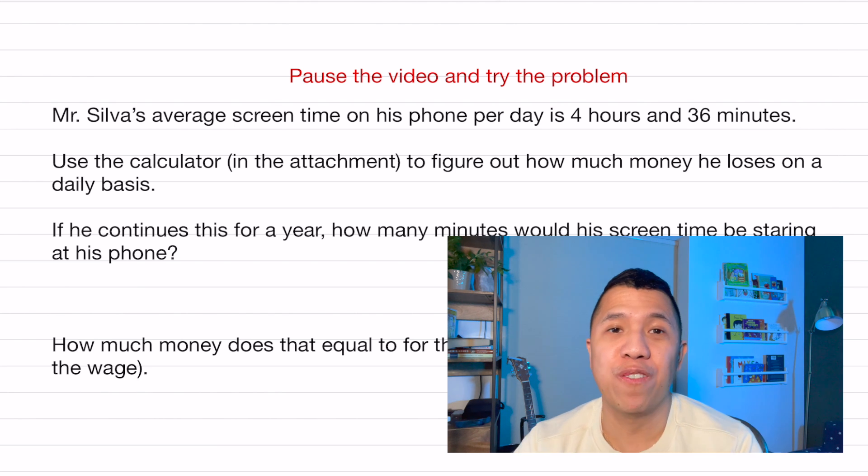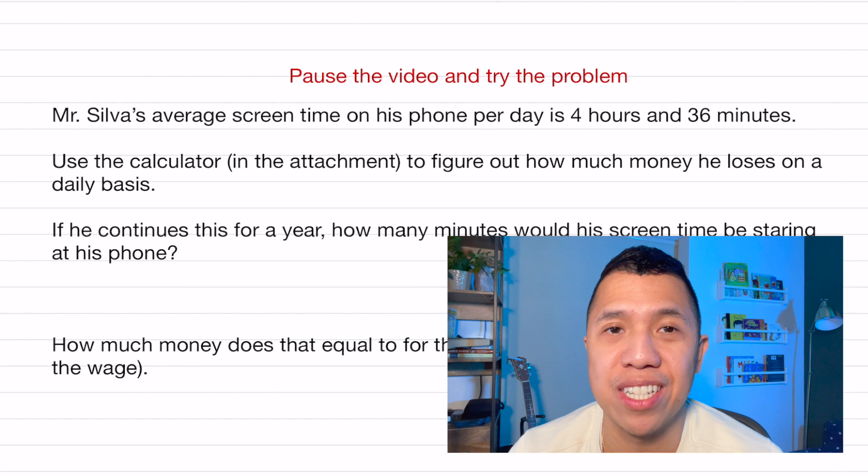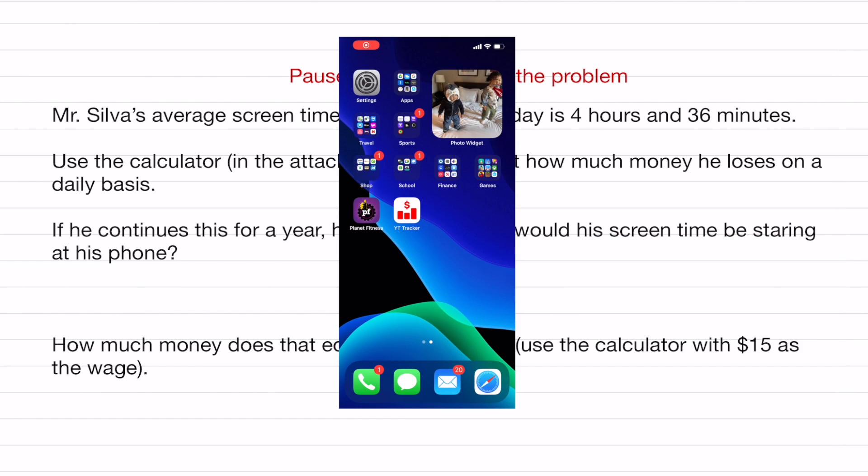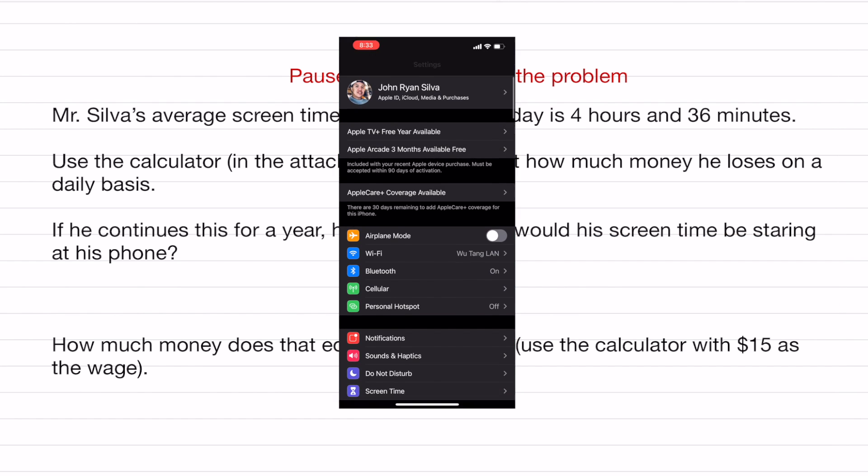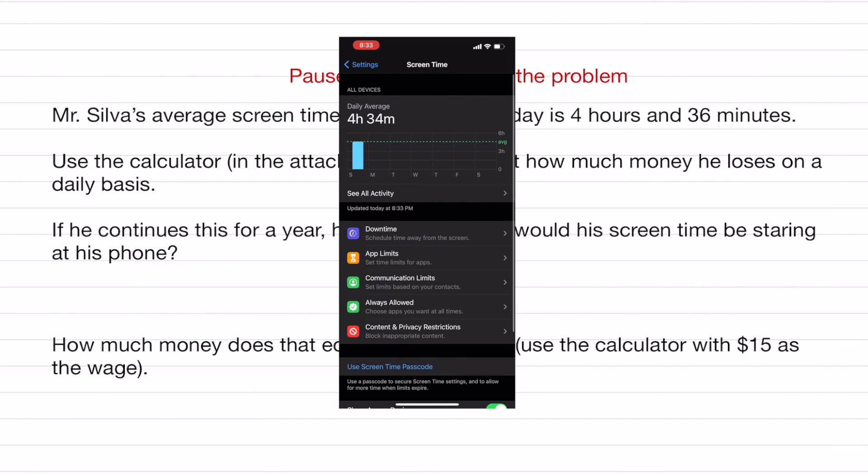But let's go through my phone and see my phone time on a daily basis. If you got an iPhone, all you got to do is hit settings. Find where it says screen time. Click that. But mine is 4 hours and 34 minutes on a daily average.